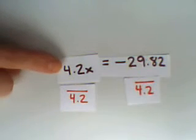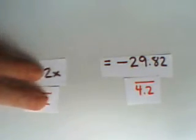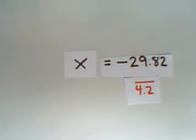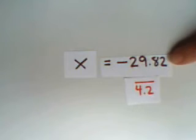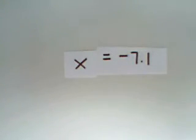On the left side, 4.2x divided by 4.2 leaves me with just plain old x. On the right side, negative 29.82 divided by 4.2. I used a calculator to come up with negative 7.1, the answer to this problem.